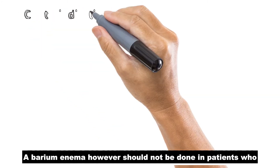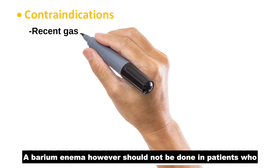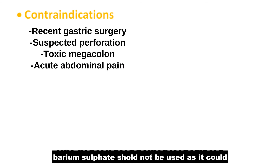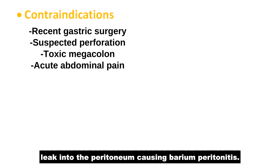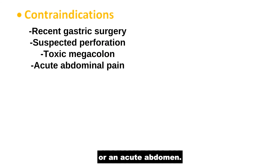A barium enema, however, should not be done in patients who just had gastric surgery. In cases of suspected perforation, barium sulfate should not be used as it could leak into the peritoneum causing barium peritonitis. Also, the examination should be avoided in patients with toxic megacolon or an acute abdomen.